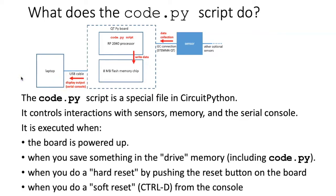Unlike a normal Python script that you would invoke from the keyboard, code.py gets automatically executed under several circumstances. It gets executed when the board initially powers up. It also gets executed every time you save something in the drive memory, including saving a new version of code.py.